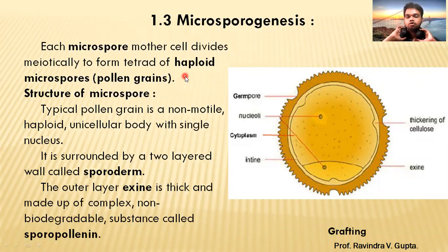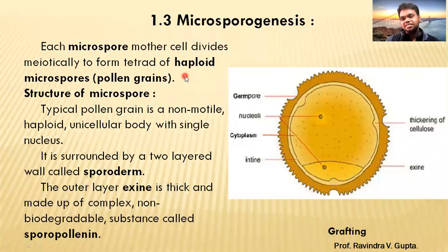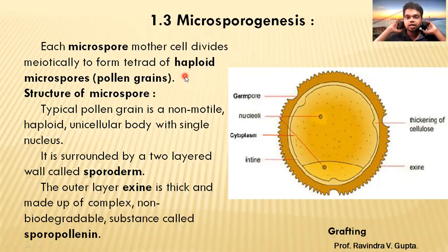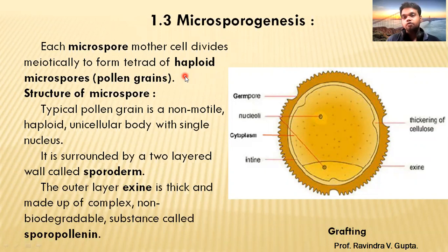If we compare with the human body, in a male, in the testes, there is spermatogenesis, and the mother cell forms a sperm. Similarly in the plant, there is meiotic division in the male part. The pollen grain, which is the male part, is formed — that is the microspore.